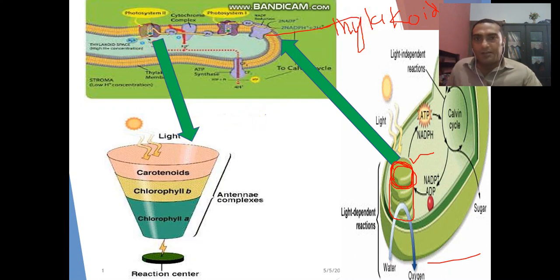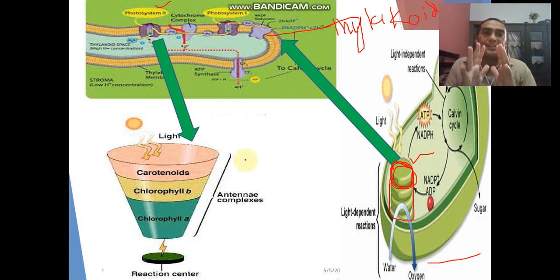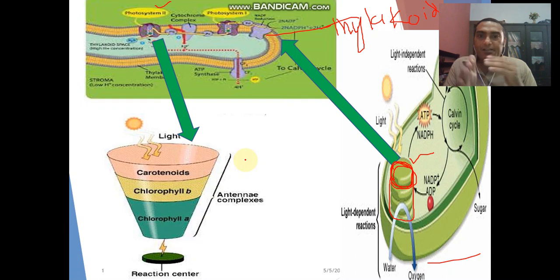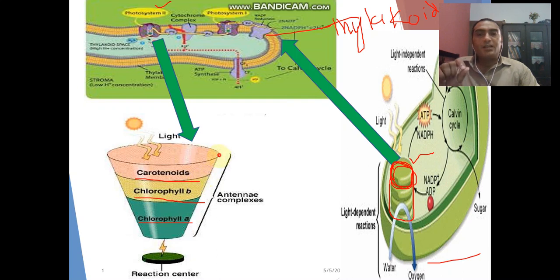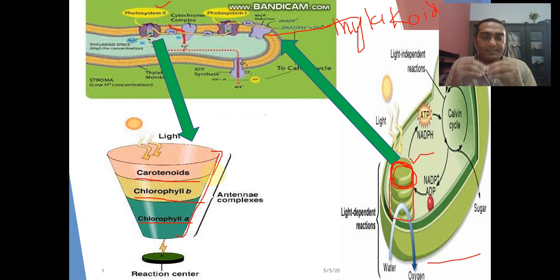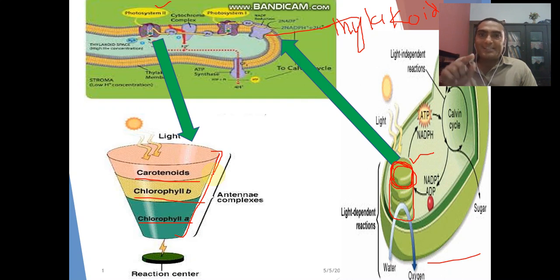On the thylakoid membrane, there is an availability of photosystem 2 and photosystem 1. Each photosystem possesses a number of pigments, known as the antenna complex. The antenna complex absorbs sunlight. It contains chlorophyll A, chlorophyll B, carotenoid, and a number of other pigments. These pigments are collectively known as the antenna complex, located on the photosystem.